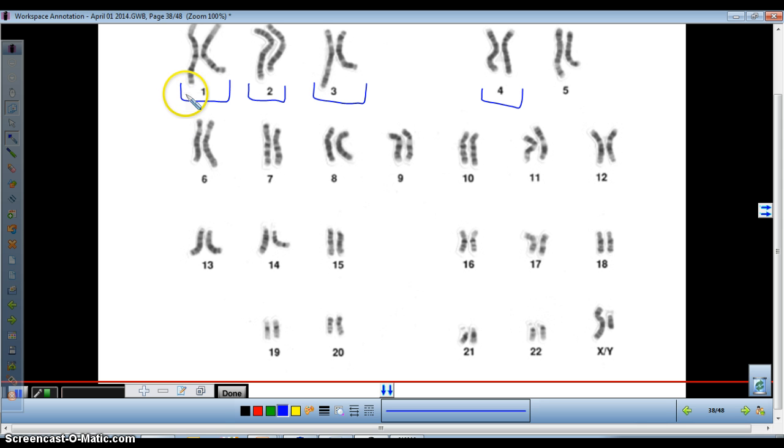The chromosomes would be matched up based on size, banding pattern, or gene location, and they would be paired up in homologous pairs. So these are homologous chromosomes.